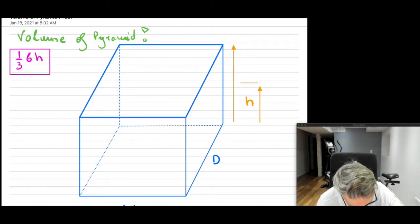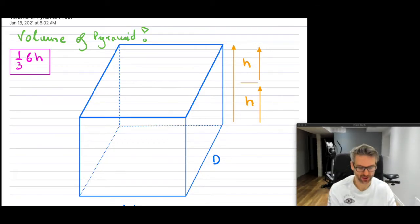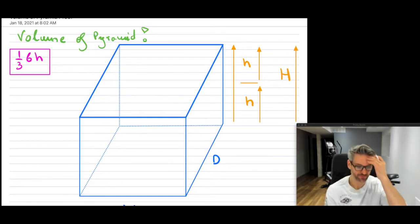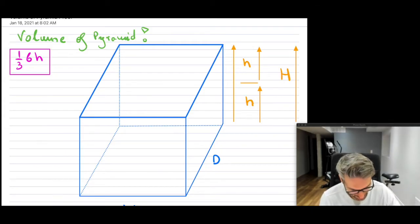And then of course you have h again, which is the other half. Now you're going to see why I'm doing that. So the entire thing is basically the entire height. Let's call that H. So that would have been the entire height all the way up here of this cube.